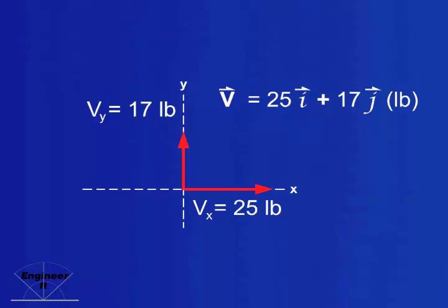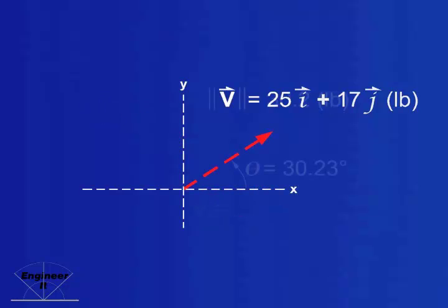And the one in the direction of unit vector j, on the y axis, is 17 pounds. The magnitude of v is 30.2 pounds acting at an angle of 30.23 degrees from the x axis.